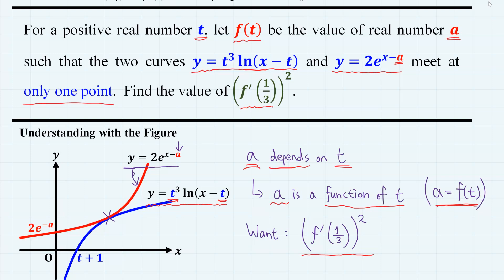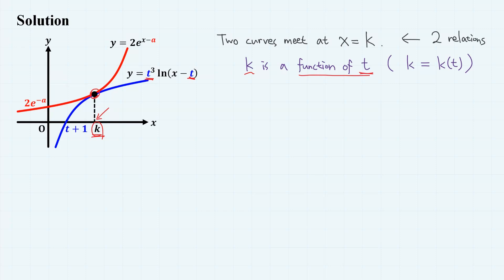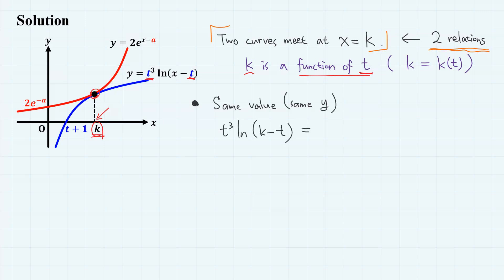Let's actually solve the problem. Suppose the two curves meet at a point where its x-coordinate is k. Notice that when t changes, this x-coordinate also changes, so k is also a function of t. Two functions have the same y-value at x equals k, giving us: t cubed ln k minus t equals 2e to the power of k minus a. Let's call this Equation 1.